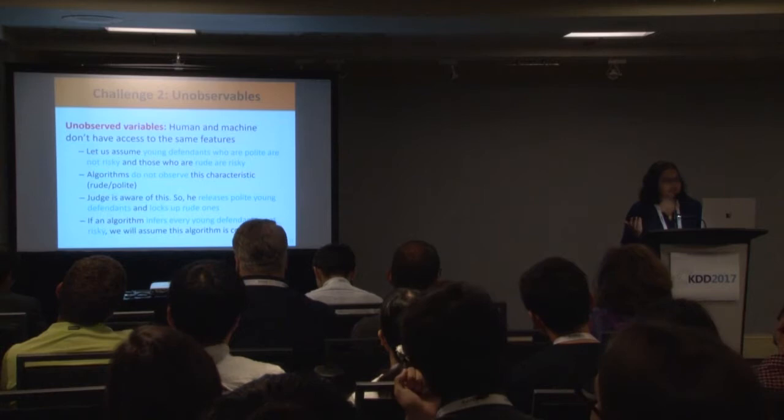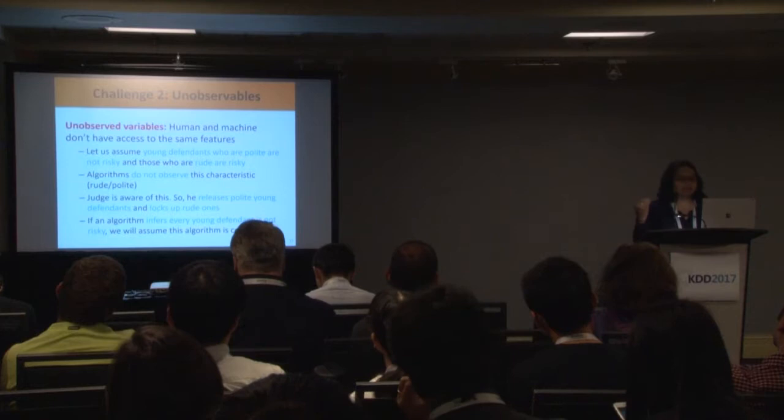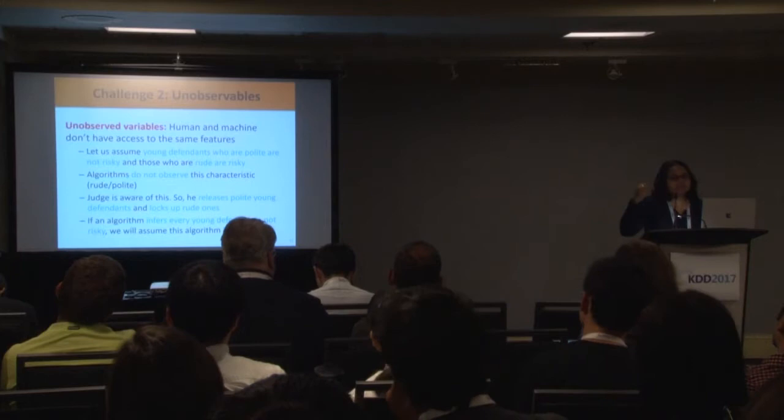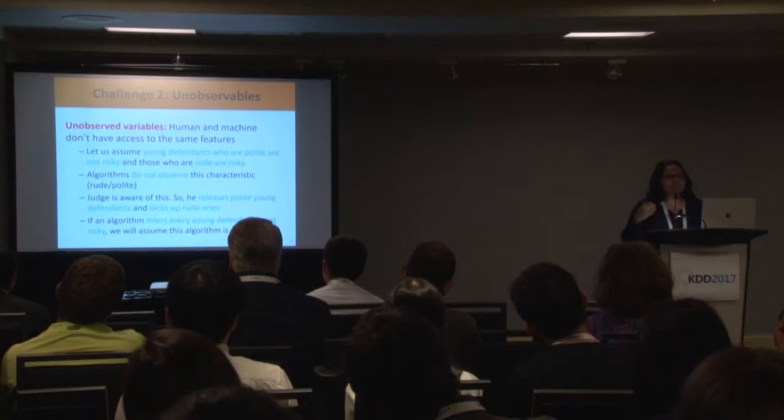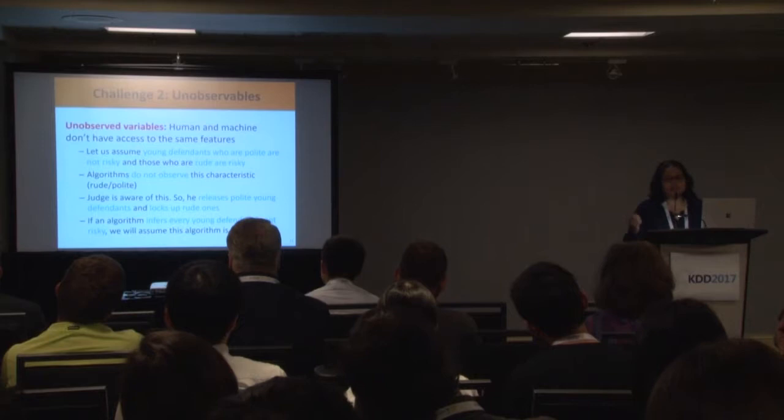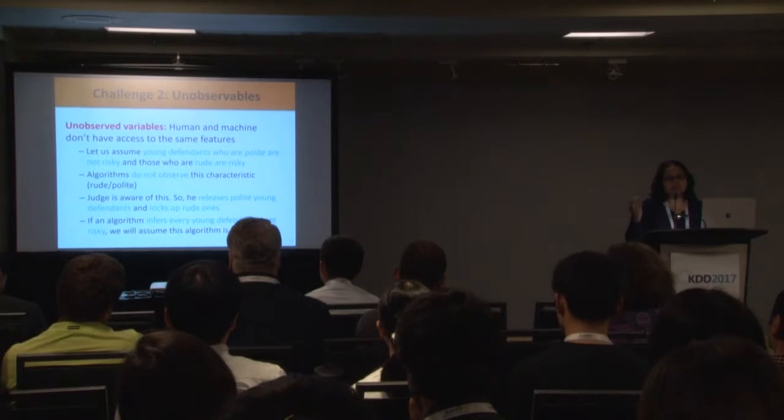If the judge is aware of this, they will typically release young defendants with polite behavior. But what you see in the data is that all released young defendants are not committing crimes — suggesting that releasing a young defendant is generally good. An algorithm trained on this data will say 'let's just release all young defendants,' and this is the kind of bias faced by existing solutions.